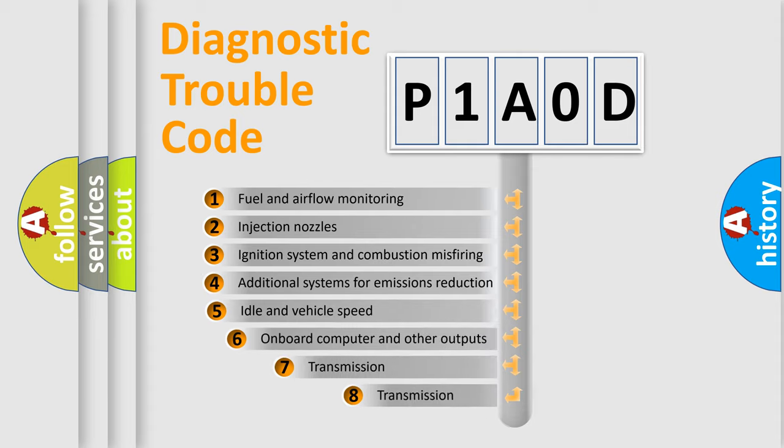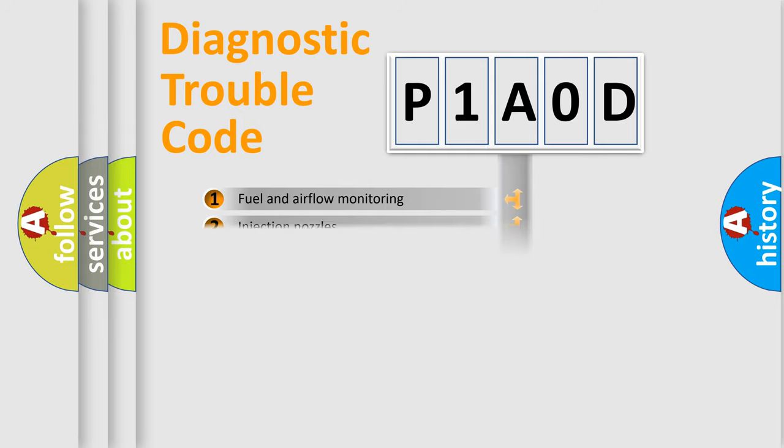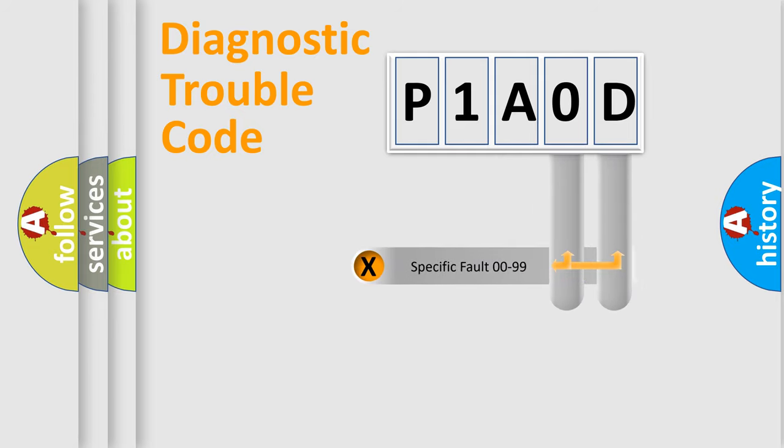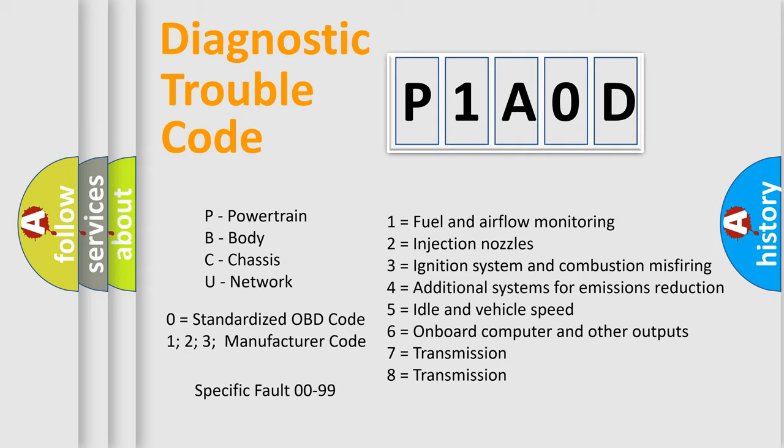The third character specifies a subset of errors. The distribution shown is valid only for the standardized DTC code. Only the last two characters define the specific fault of the group. Let's not forget that such a division is valid only if the second character code is expressed by the number zero.